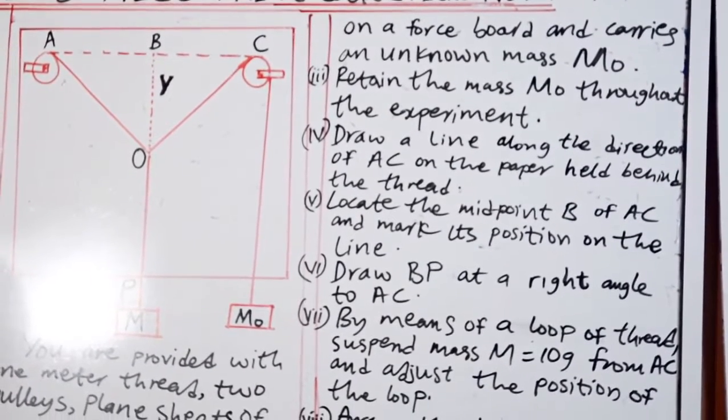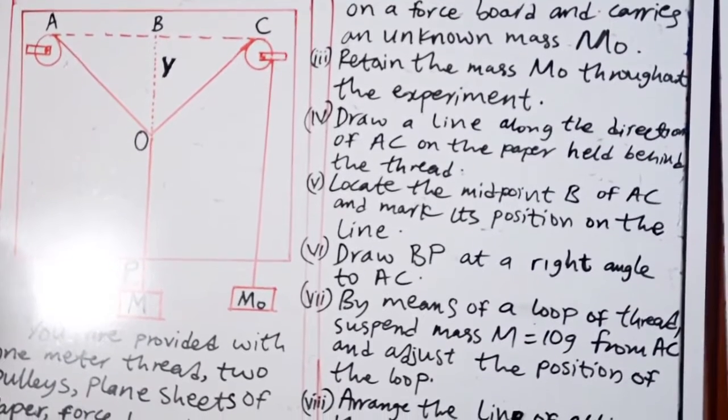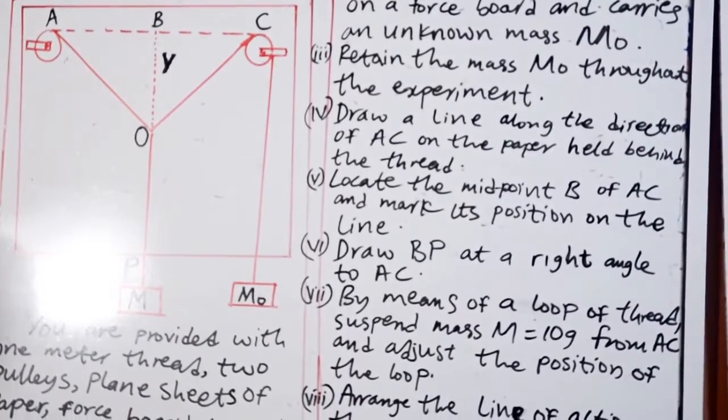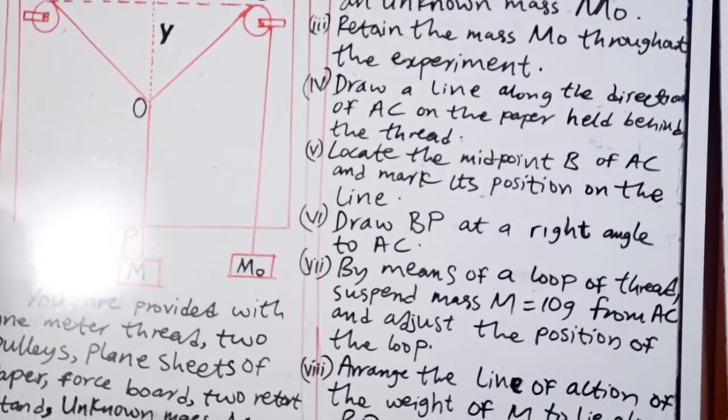Four: Draw a line along the direction of AC on paper, held behind the thread. Five: Locate the midpoint B of AC and mark its position on the line.